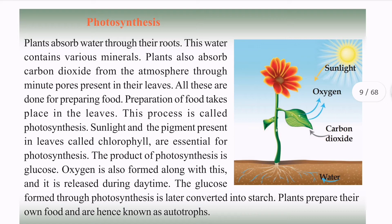Glucose is released during daytime. Oxygen is released during daytime as well. Glucose formed through photosynthesis is later converted into starch.